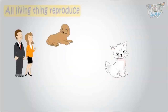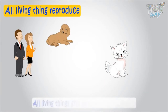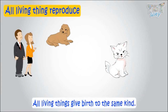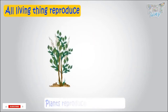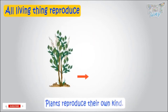We know all living beings reproduce — that is, all living things give birth to the same kind. Humans reproduce humans, dogs reproduce dogs, cats reproduce cats, and so on. Similarly, plants too reproduce their own kind.